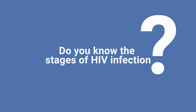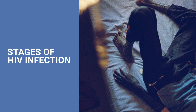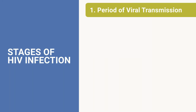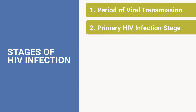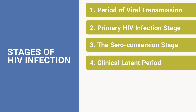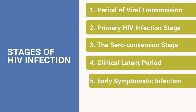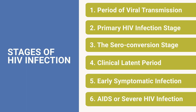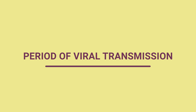Do you know the stages of HIV infection and when the symptoms begin to manifest? The stages of HIV infection include: 1) period of viral transmission, 2) primary HIV infection stage, 3) the seroconversion stage, 4) clinical latent period, 5) early symptomatic infection, and 6) severe HIV infection.